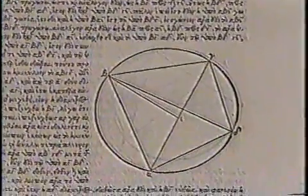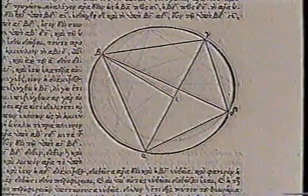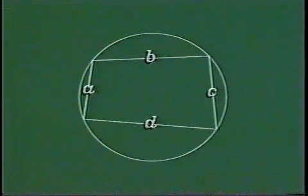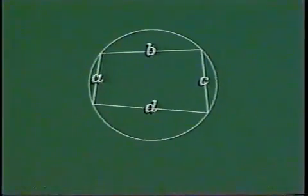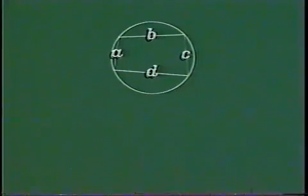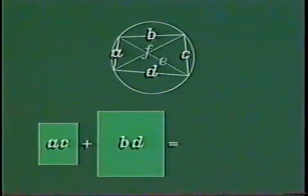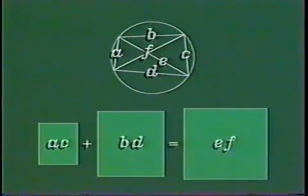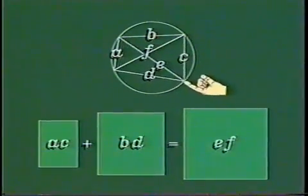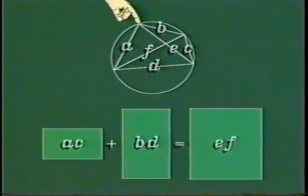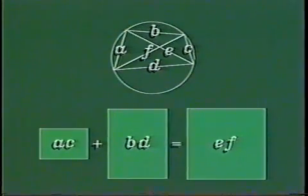Ptolemy himself proved the addition formula in another way, using a remarkable property of quadrilaterals that can be inscribed in a circle. A quadrilateral is a polygon with four sides. Not every quadrilateral can be inscribed in a circle, but for those that can, the product of the lengths of these two opposite sides plus the product of the lengths of these two opposite sides is equal to the product of the lengths of the two diagonals. This equation is called Ptolemy's theorem, and it can be interpreted geometrically in terms of areas of rectangles. The equation is true no matter where the vertices lie on the circle.